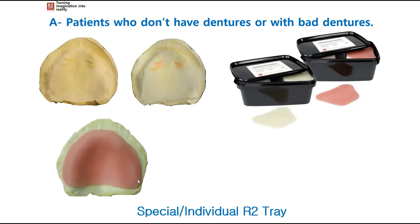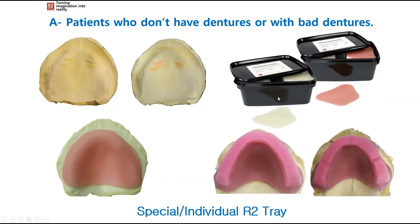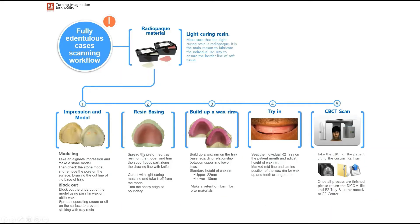To fabricate the special R2 tray, we use triad — a specific type that is radiopaque. We make a standard special tray for the patient just like we usually do for impressions, but using this radiopaque triad. On top of that, we put a layer of wax, making it look like a bite block. The workflow for fully edentulous cases goes: models, resin basing, buildup of a wax rim, try-in, and then we CBCT scan the patient wearing that bite block.